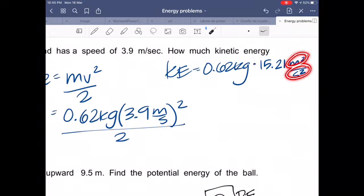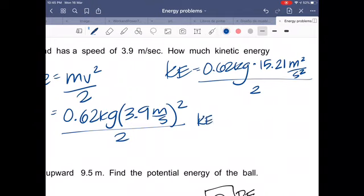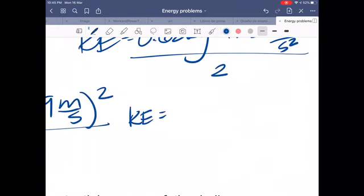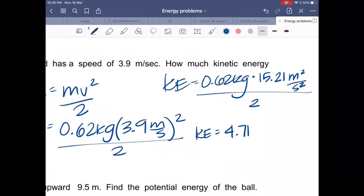And then you will divide it by two. Now you have the kinetic energy equals 15.21 divided by two. And your answer will be 4.71. And you can see that if you combine kilograms times meters squared over seconds squared, it will give you kilogram meters squared over seconds squared, which is the same as joules.